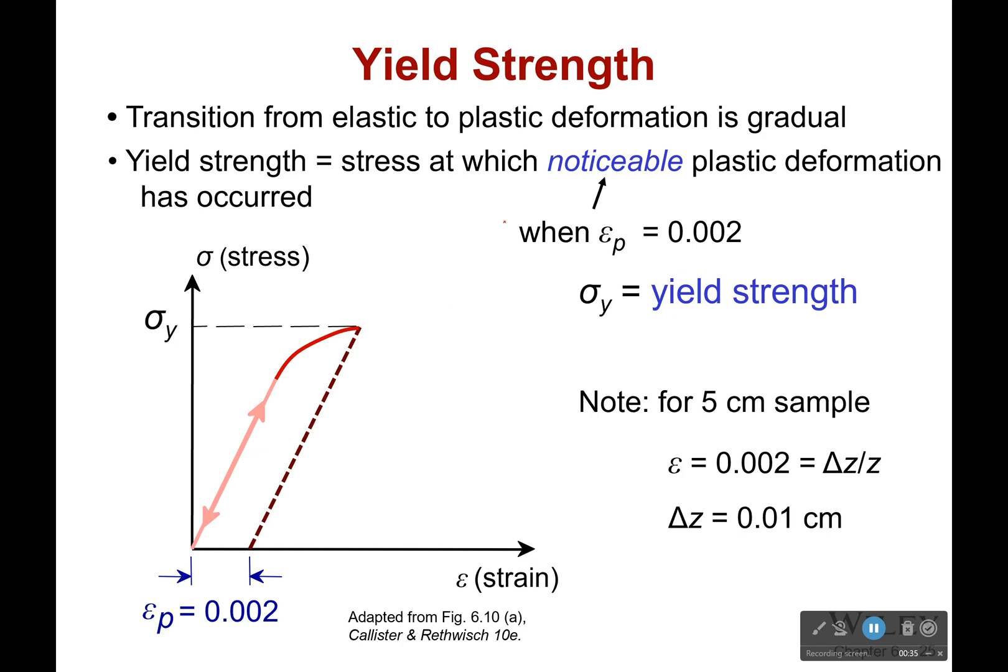Our transition from elastic to plastic is very gradual. You can't actually see necessarily where it started, so to help us out, we find the place where we have a noticeable plastic deformation, which is still very small - like 0.2 percent change in length. Since it's so hard to find the elastic region, we'll say my elastic region is at the yield strength.